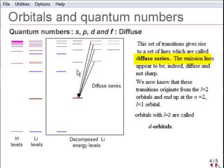The diffuse emission series all start in states with L equals 2 and all terminate in the state where N equals 2, L equals 1.